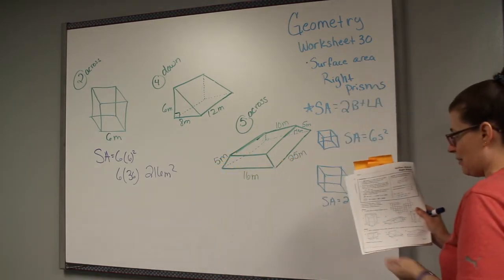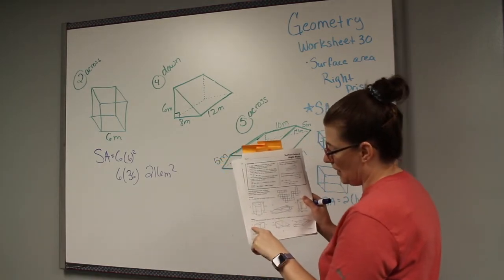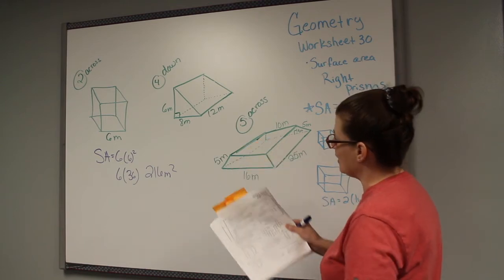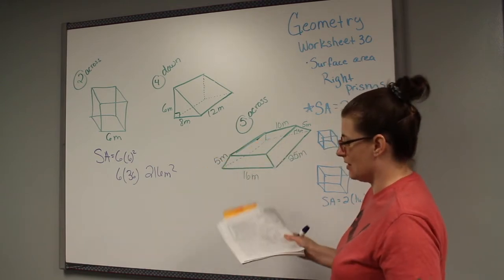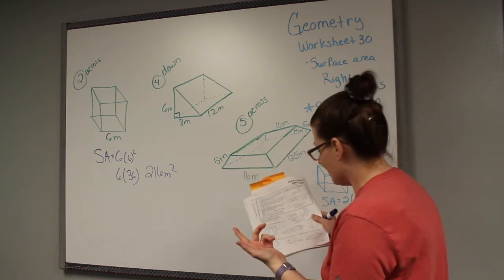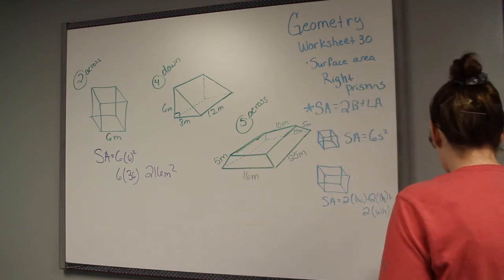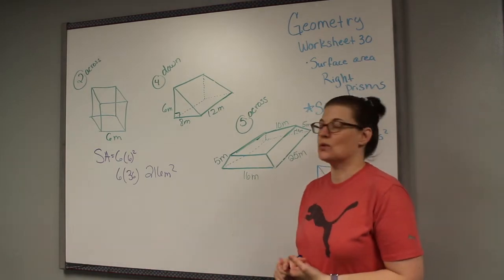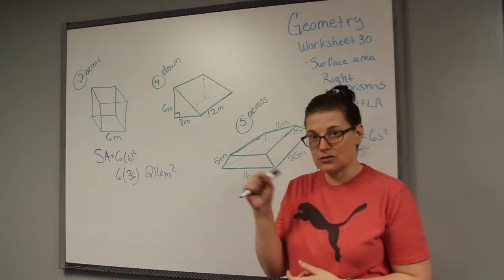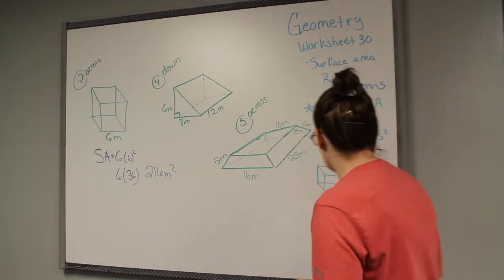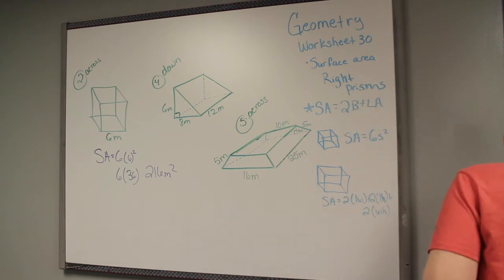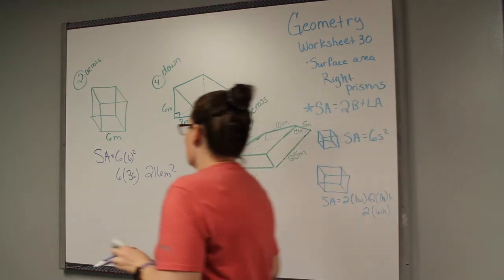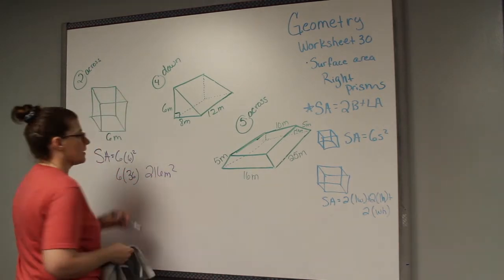There's another cube on the page at three down — use the same formula and just substitute five instead of six. If you don't have a picture for some problems, you can use one of the pictures already on the worksheet and just cross out the numbers and put the new ones in. I did an example of a rectangle because it's one of the easier ones, like a cube.